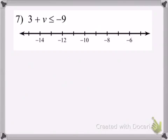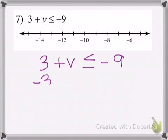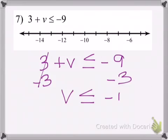Number 7, it says 3 plus v is less than or equal to negative 9. Let's subtract 3 on both sides, and get v is less than or equal to negative 12.